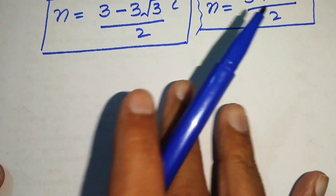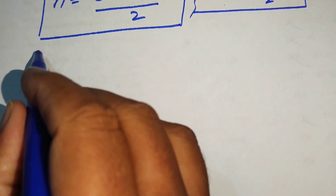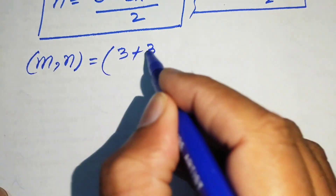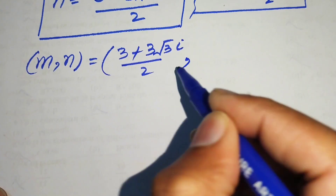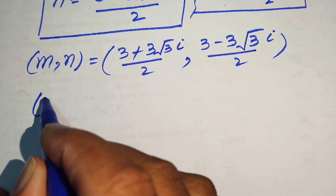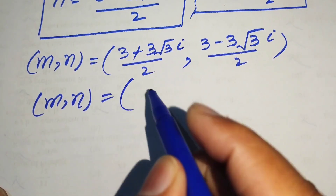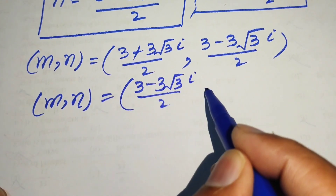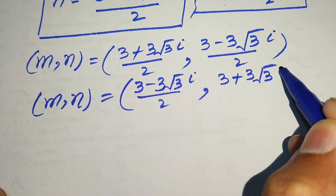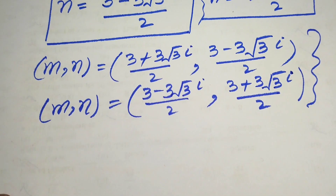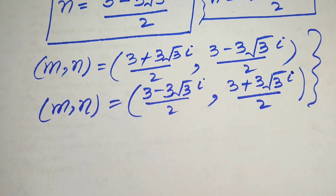Finally, we have two solutions. The first solution is (m, n) equals ((3 plus 3√3·i)/2, (3 minus 3√3·i)/2). The second solution is (m, n) equals ((3 minus 3√3·i)/2, (3 plus 3√3·i)/2). These are the two complex solutions of the given system, and that is our final answer. Thank you for watching — please subscribe for more videos.